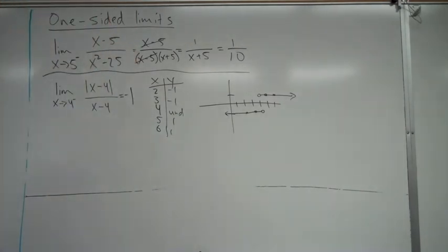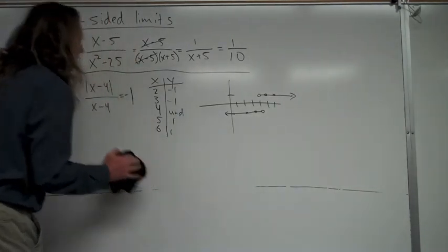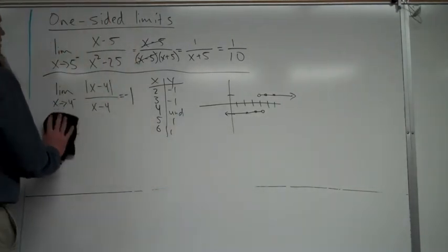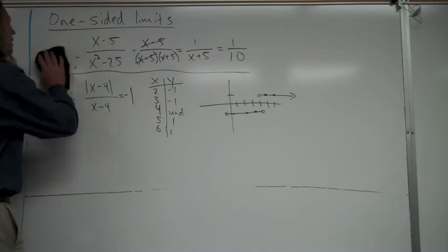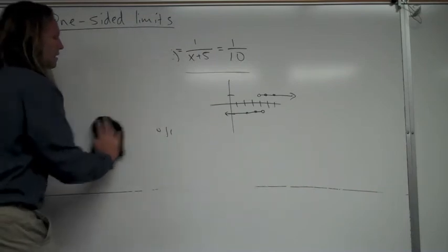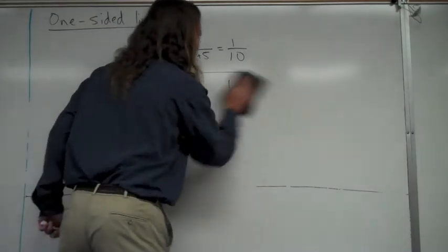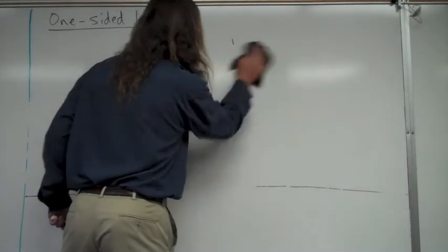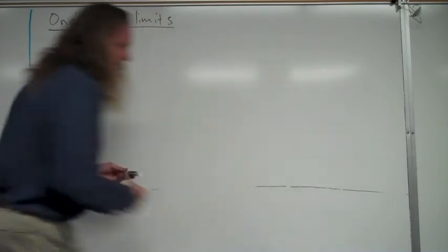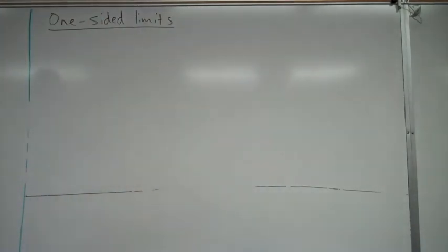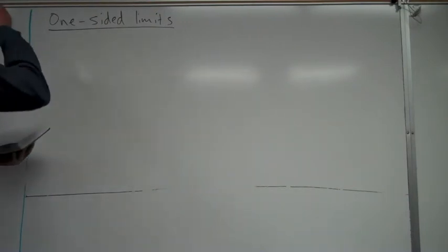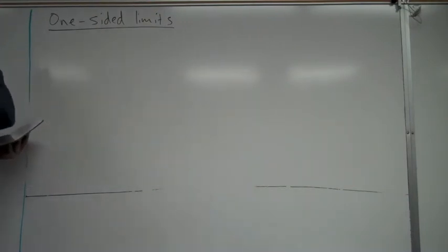If this were just the limit as x approaches 4 without the negative — meaning you look from both sides — that limit would not exist. That's one example of one-sided limits. Now let's look at one more: a piecewise function, which is somewhat common when dealing with limits.